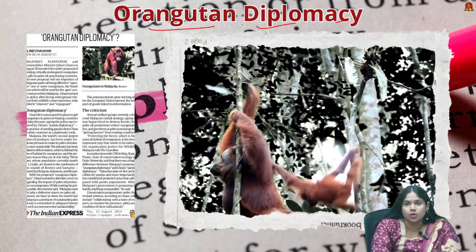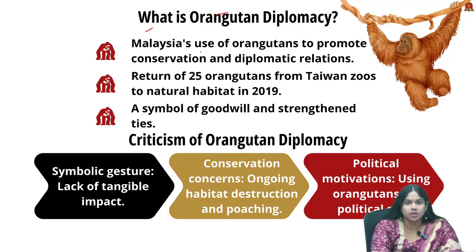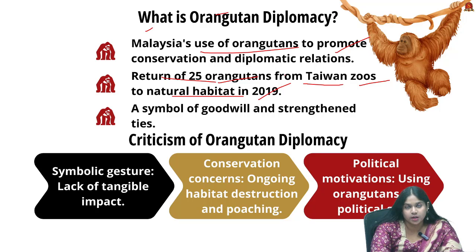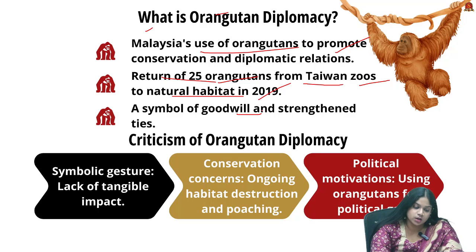Orangutan diplomacy refers to the use of orangutans to promote conservation and diplomatic relationships — seen as a symbol of diplomatic efforts and international cooperation, particularly in conservation and wildlife protection. In 2019, the Malaysian government initiated a program to return 25 orangutans from Taiwanese zoos to their natural habitat, seen as a gesture of goodwill. The term 'orangutan diplomacy' was coined to describe this unique international approach.